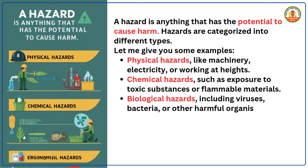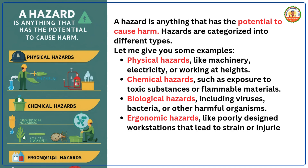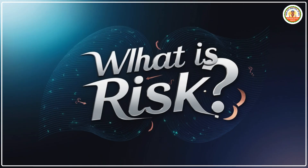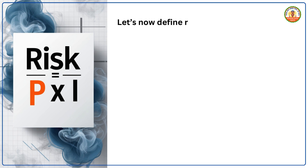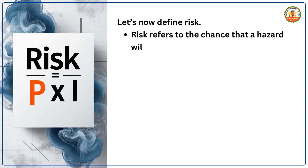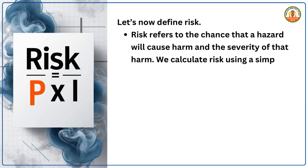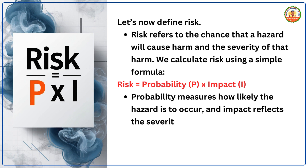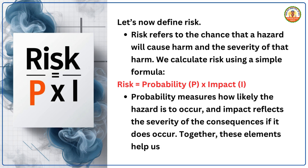Ergonomic hazards, like poorly designed workstations that lead to strain or injuries. It's crucial to identify these hazards early to prevent incidents and maintain workplace safety. Now let's define risk. Risk refers to the chance that a hazard will cause harm and the severity of that harm. We calculate risk using a simple formula: Risk = Probability (P) × Impact (I). Probability measures how likely the hazard is to occur, and impact reflects the severity of the consequences if it does occur.